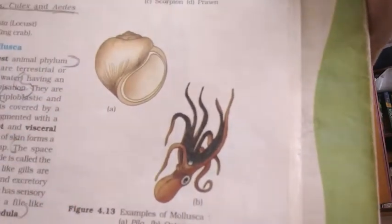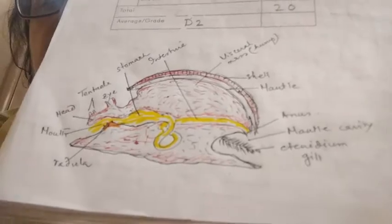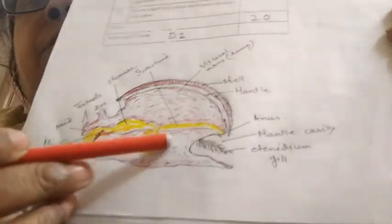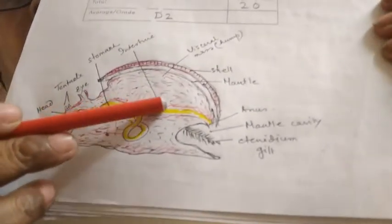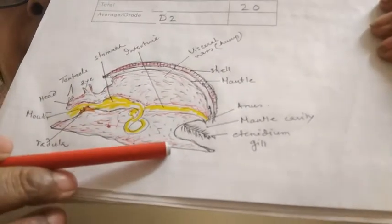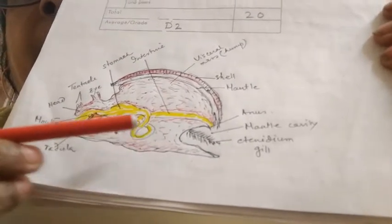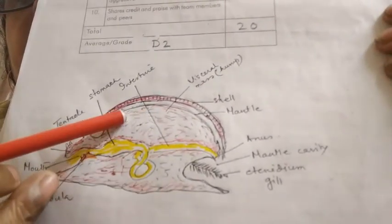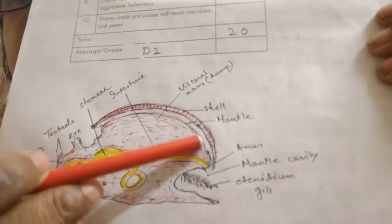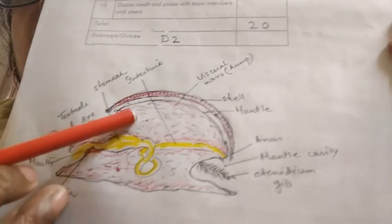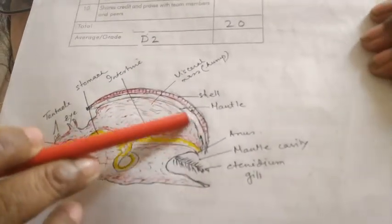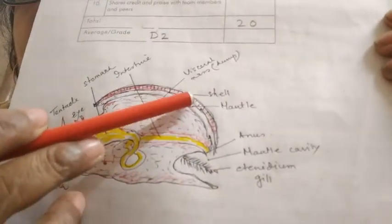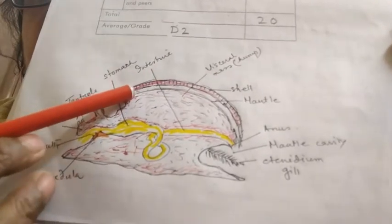The body is divided into head region, the visceral hump which contains most of the vital organs, and the foot. So body has three parts: head, visceral hump and foot. From here, a skin fold, you can see here, a fine skin fold has been produced which is called mantle. This mantle in turn secretes the shell.